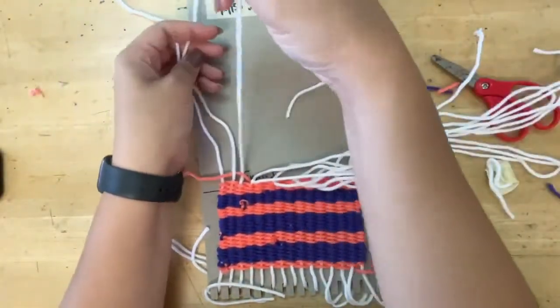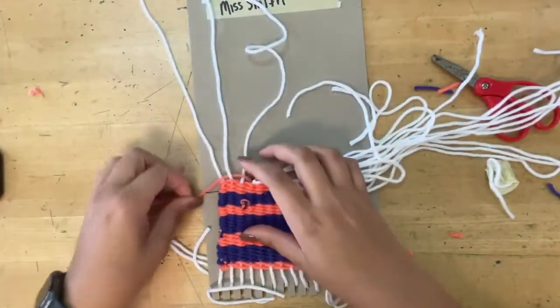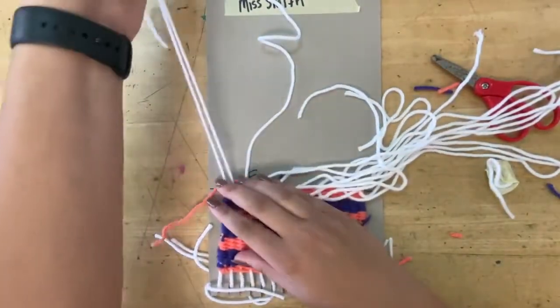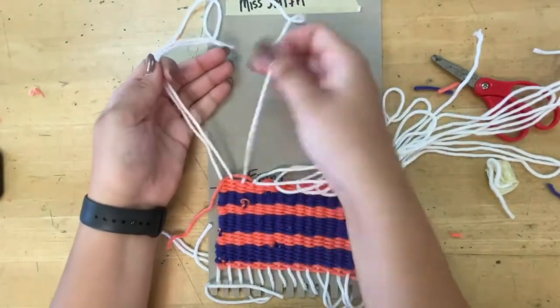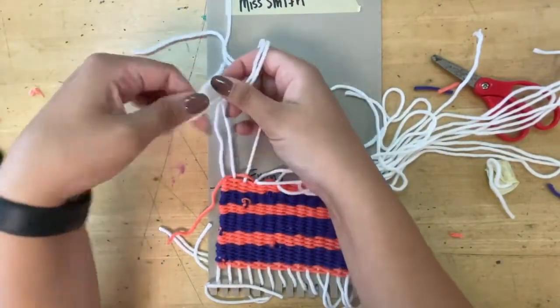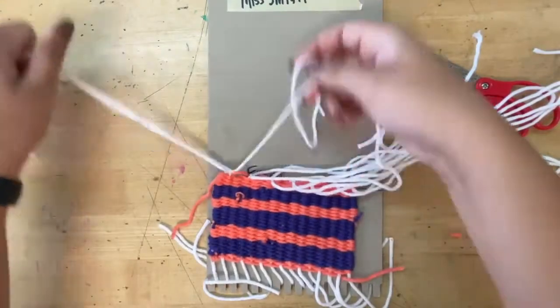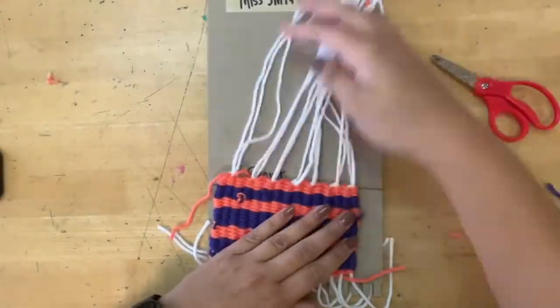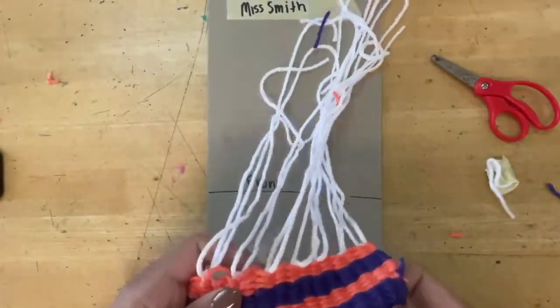When you get to the end, you have three strings. Take two strings in one hand, one string in the other hand, same thing, double knot. Just like that. Then, you're going to do the same thing on the bottom.